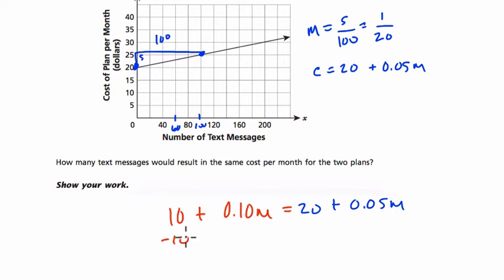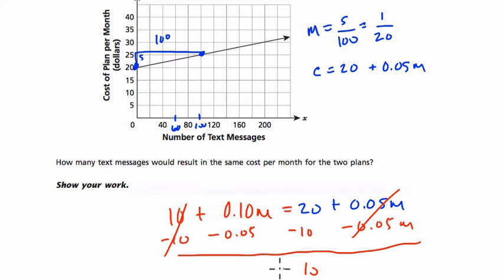To solve this, I'm going to subtract 10 from both sides. And I'm going to subtract 0.05 from both sides at the same time just to save space. Okay. 10s cancel out. 20 minus 10 is 10. These cancel out. And 0.10 minus 0.05 is 0.05, M.